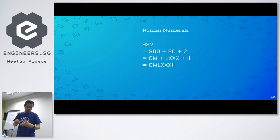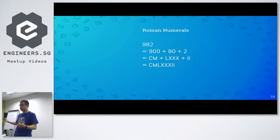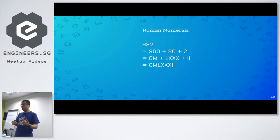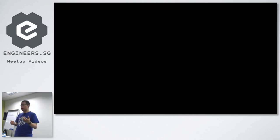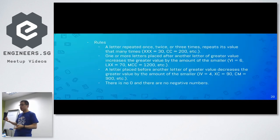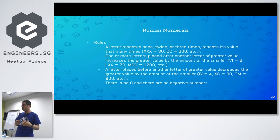There are further rules: values representing 1, 10, 100, 1000 cannot be repeated more than three times. Another rule says I can only appear in front of V or X. Also, there is no zero in Roman numerals and no negative numbers. If you follow the rules we defined, the maximum number that can be represented using Roman numerals with those characters is 3,999. If you like, take a screenshot of this slide. These rules can also be found by searching online — just search Roman numerals and there are quite a few websites that describe them.